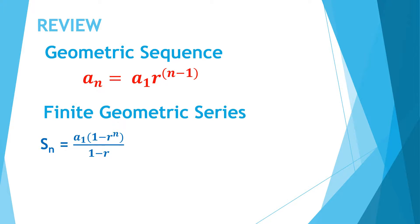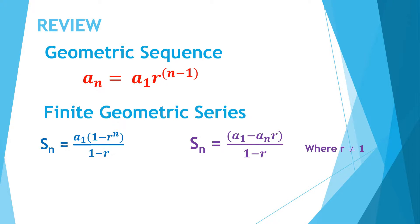The other formula is S_n = (a_1 − a_n × r) / (1 − r). You use this formula if you are given a_1 and a_n of your finite geometric series. Remember that you can only use this formula if r is not equal to 1.